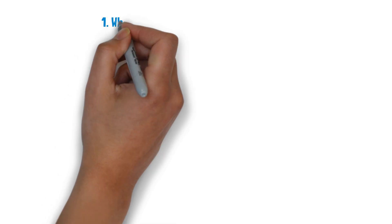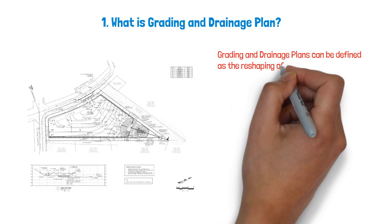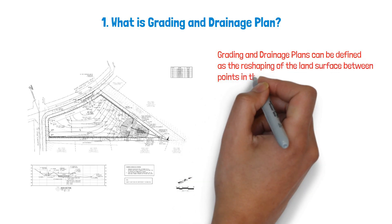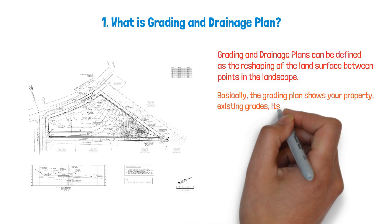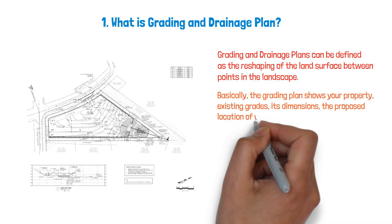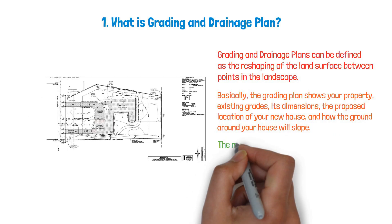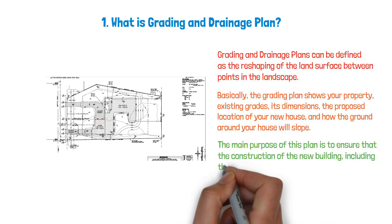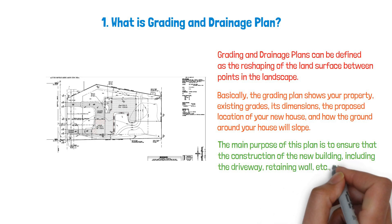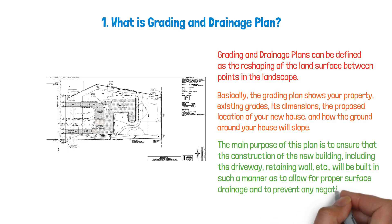Grading and drainage plans can be defined as the reshaping of the land surface between points in the landscape. Basically, the grading plan shows your property's existing grades, its dimensions, the proposed location of your new house, and how the ground around your house will slope. The main purpose of this plan is to ensure that construction of the new building — including the driveway, retaining wall, etc. — will be built to allow for proper surface drainage and to prevent any negative impacts on adjoining lands.